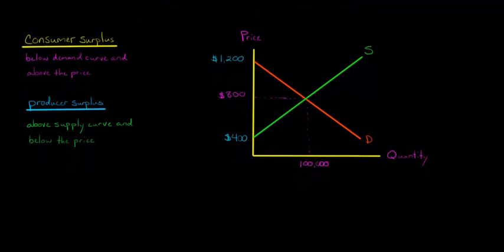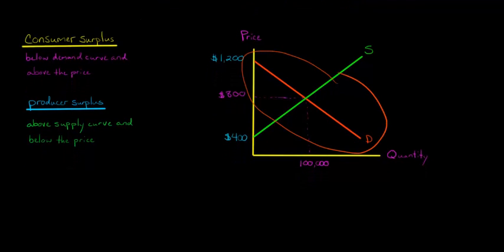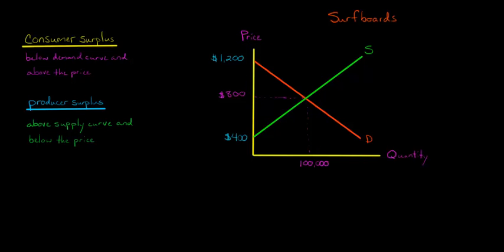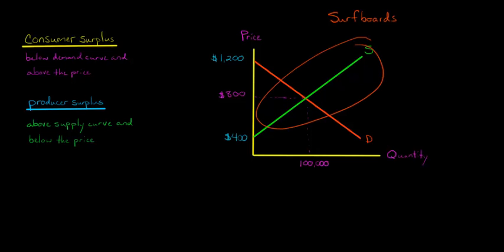Let me give you an example. We've got our demand curve — and this is not just one person's demand — let's say we're talking about the market for surfboards. This demand curve tells us all the different amounts that would be demanded at different prices. Then we've got our supply curve, which is the amount that producers of surfboards would be willing to supply at different quantities and prices. When the supply curve and the demand curve intersect, that point is our equilibrium.